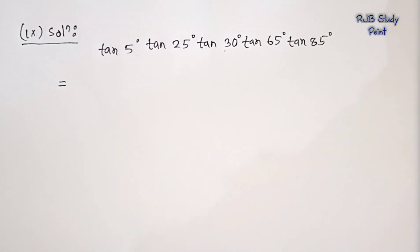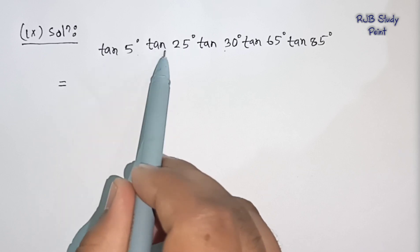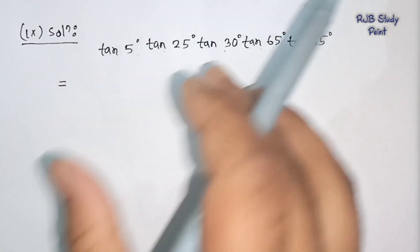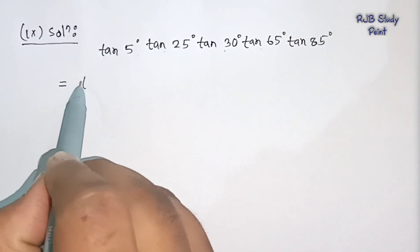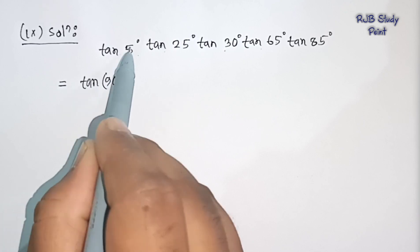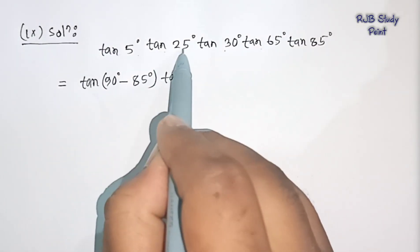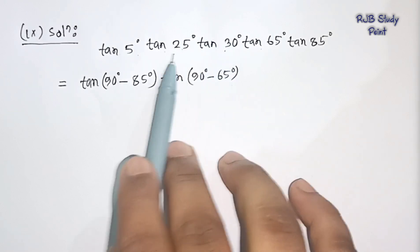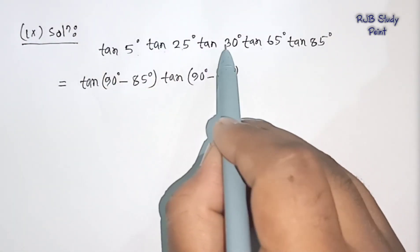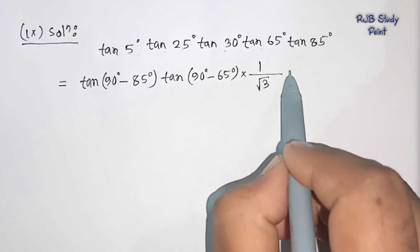Now for question 9. Tan 30 degree means 1 by root 3. We have tan 5 degree, tan 25 degree, and we can keep tan 65 or tan 85. We use 90 degree minus 5 to get 85 degree, and 90 degree minus 65 to get 25 degree. Tan 30 degree means 1 divided by root 3.